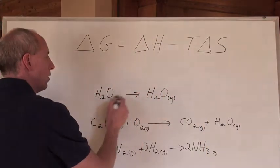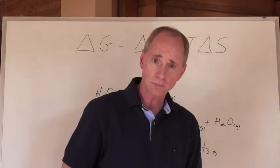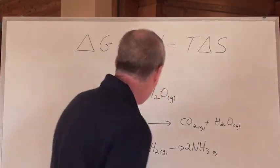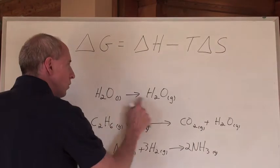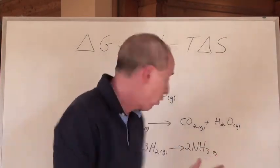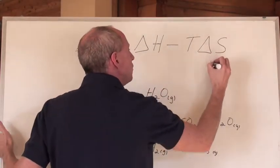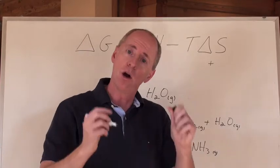Here's a reaction right here. Water liquid turns into water gas. I want to know if it's spontaneous or not. So this is what I do. I understand that water liquid going to water gas would be a huge increase in the amount of chaos going from left to right, order to disorder. So that's positive system entropy.